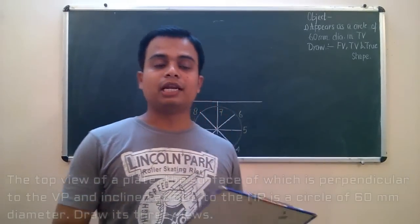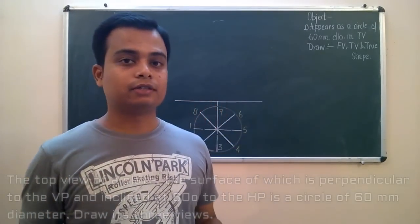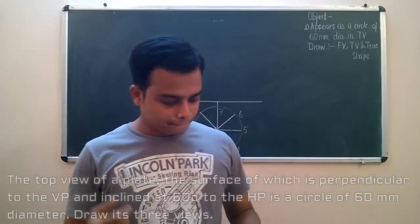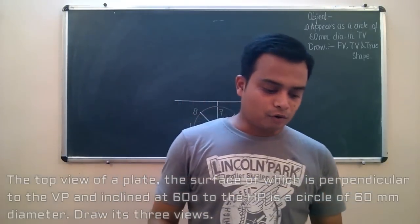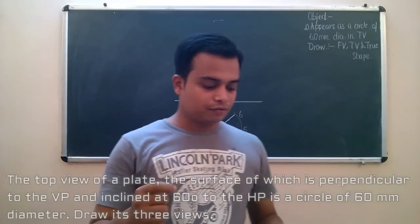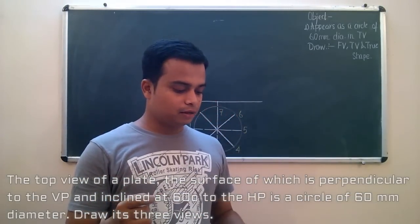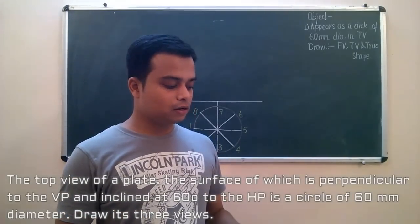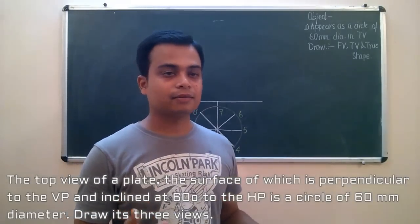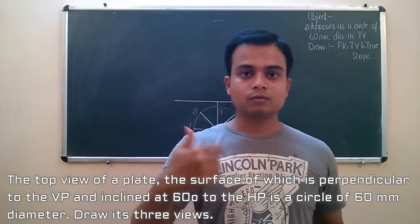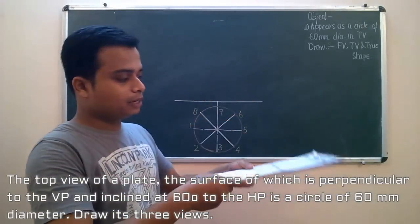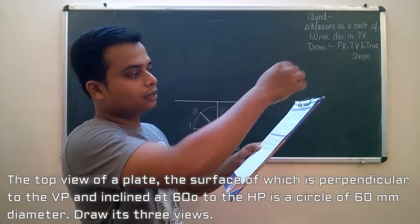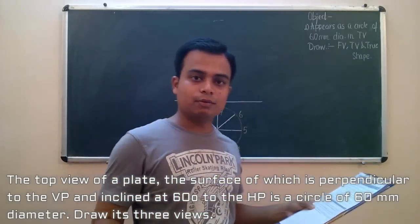This is going to be the last question as far as production of plate is concerned. The top view of a plate, the surface of which is perpendicular to the VP and inclined at 60 degrees to the HP, is a circle of 60 mm. There is a plate and when that plate is kept at an angle of 60 degrees it looks like a circle from the top.